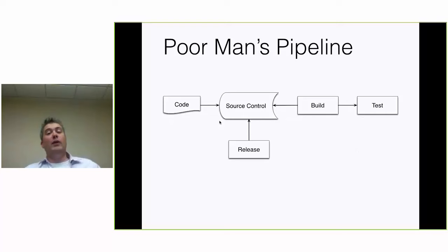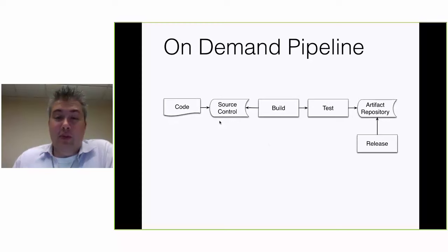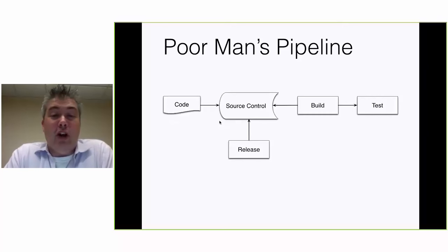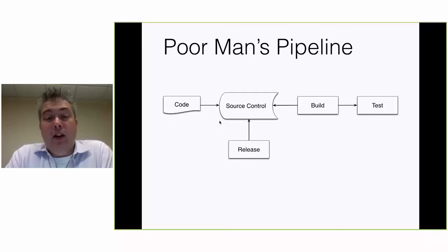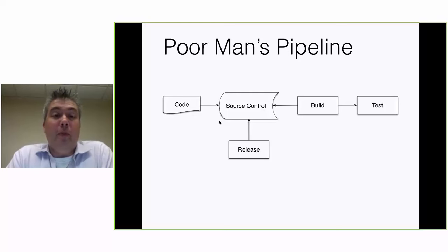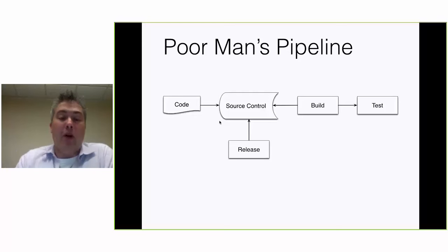Lastly, I like to call this the poor man's pipeline — if you don't have infrastructure. This is actually the pattern I use. It's a simplified version of the on-demand pipeline: you're just doing this on a local machine. Whenever you do a check-in, you run your build and run your tests. Then when you're ready to release your software, you run some kind of release script that generates your package and publishes it out. This is the process I use for Carbon and a couple of other modules I have on the gallery.